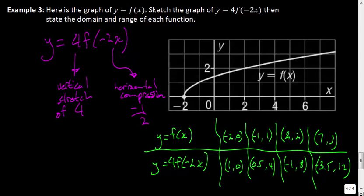The point that was at (−2, 0) is now at (1, 0) — way over here. The point at (−1, 1) is now at (0.5, 4) — way up here. The next points would be at (−1, 8) and then (−3.5, 12). So the best that I can do to fit on this little grid would be a function that looks approximately like so.